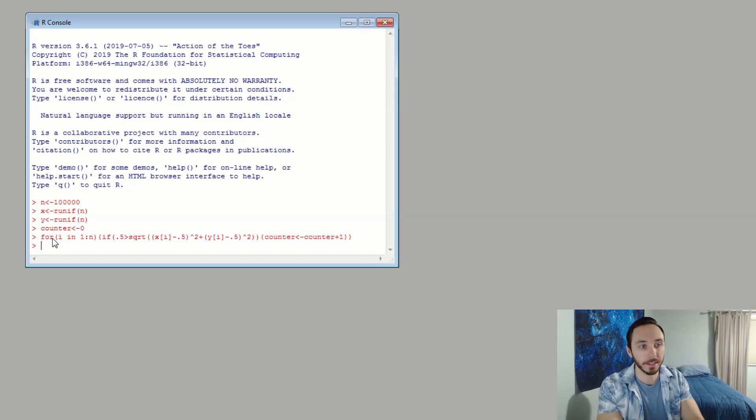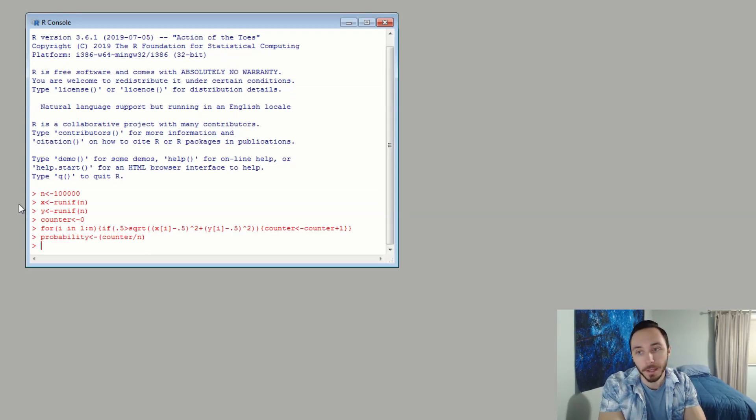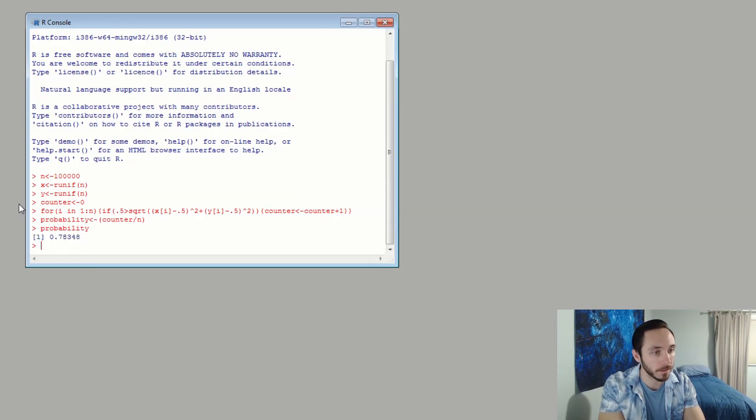If we're within the red circle, plus 1 to the counter. Do this all 100,000 times and boom, the computer just did that. The moment I clicked enter, it ran 100,000 dart simulations and counted all of them within the red circle. We're going to store the probability as the number of hits, which is our counter, over the number of darts we've thrown, which is N. That's our probability. I'm curious what the probability is. It's 0.78348.